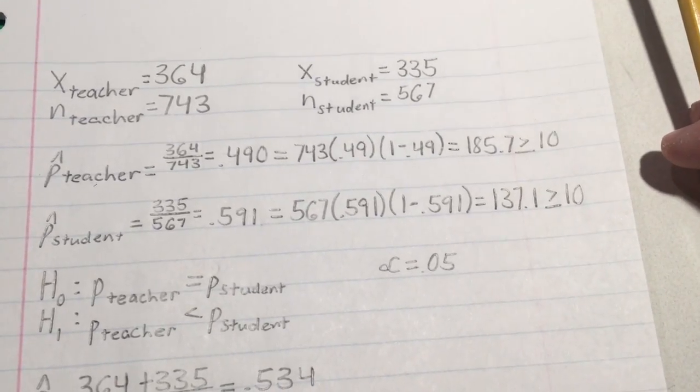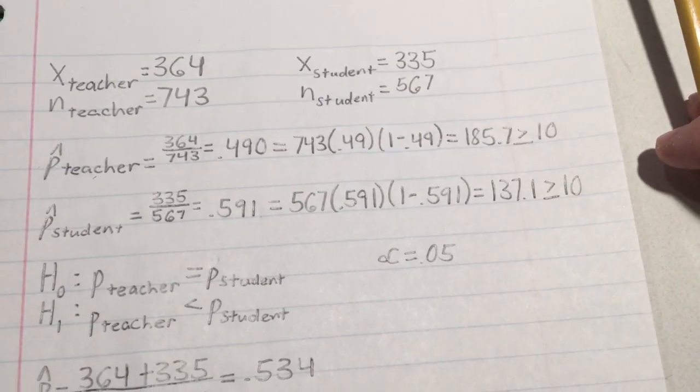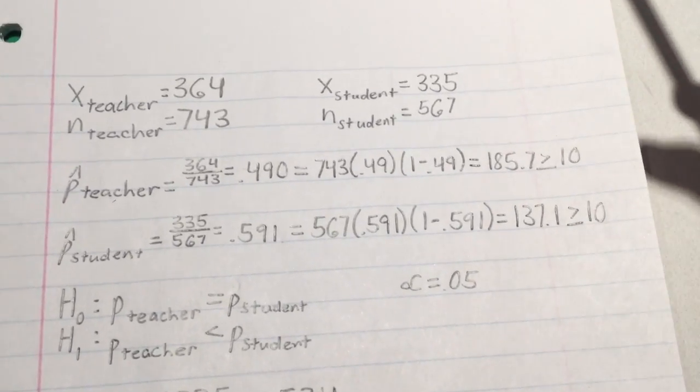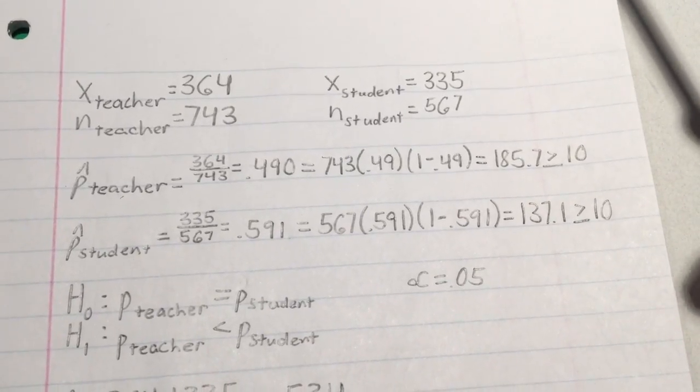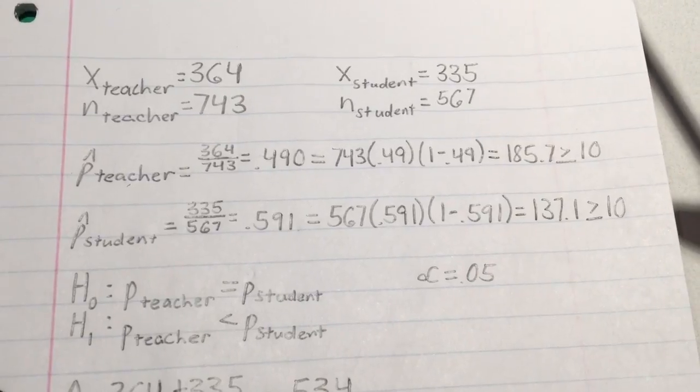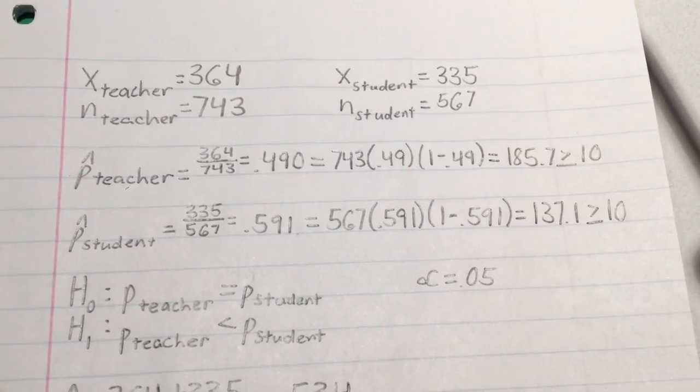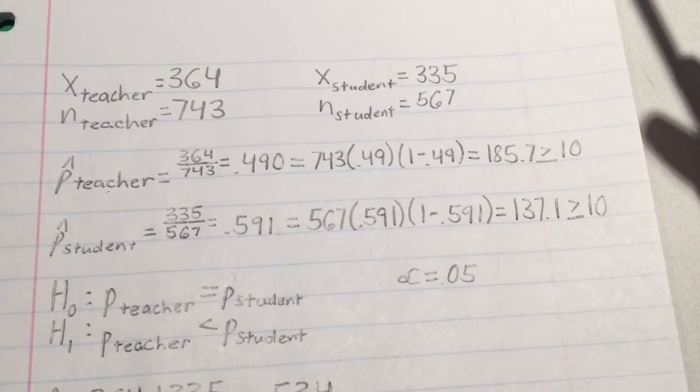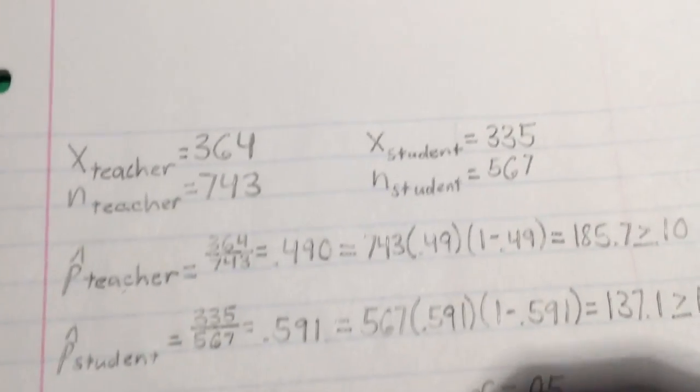In one school where this model is being introduced, of the 743 students who enrolled in the traditional lecture model, 364 passed. Of the 567 in the student-centered model, 335 passed. Does the evidence suggest that the student-centered model results in a higher pass rate than the traditional model? We'll be using the 0.05 level of significance.